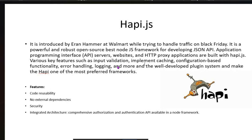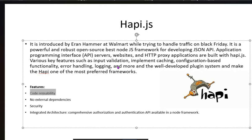Hapi.js offers key features such as input validation, implementation caching, configuration-based functionality, error handling, and logging. Its well-developed plugin system makes it one of the most preferred frameworks. In Hapi.js, there is no need to install any external dependencies like React requires. It is also secure and has an integrated architecture.